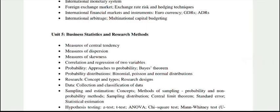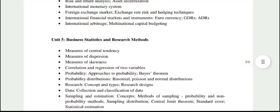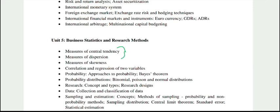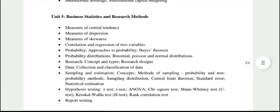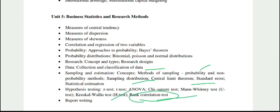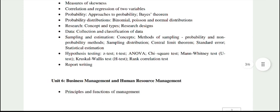Under Business Stats and Research Methods, topics like measures of central tendency and measures of dispersion will be available from class 12th. Skewness may not be there, correlation will be available, regression won't be. Probability and probability distribution you will get from graduation or post-graduation. Data and sampling topics you will get from class 12th. Probability methods and some sampling methods will be there. Rank correlation test is available in class 12th, but all other statistical tests will need to be studied from separate books.